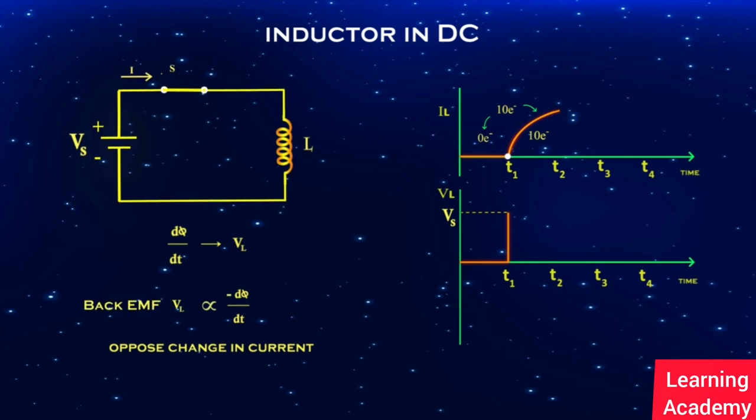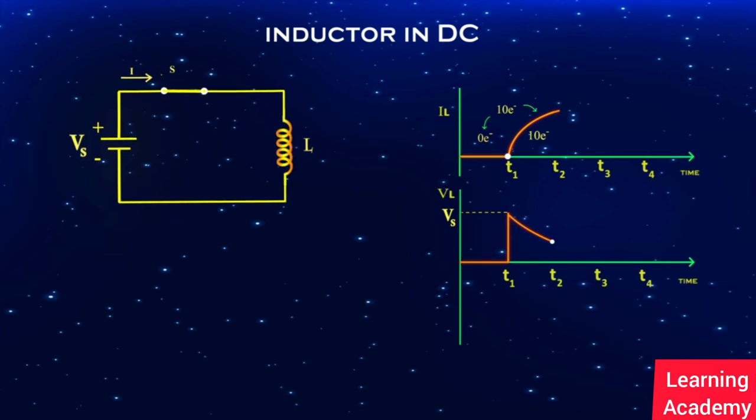So at time t2, there will be some induced voltage that opposes change in current. This induced voltage will be less than Vs. Between time t2 and t3...